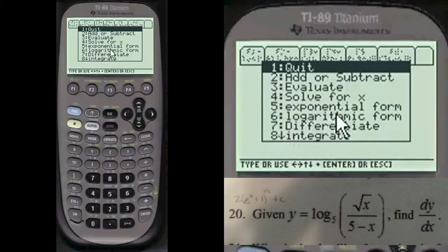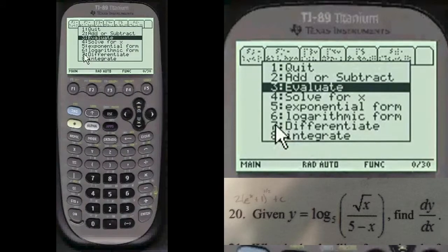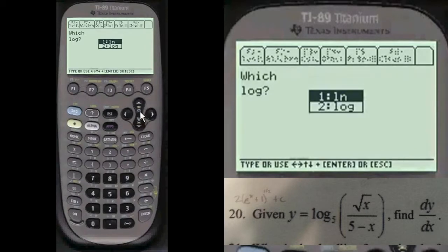And we want to differentiate, so we're going to choose number 7. You can scroll with the cursor, or else choose the number. I like to choose the number, it's quicker. And number 2, we want to do a log of base something.